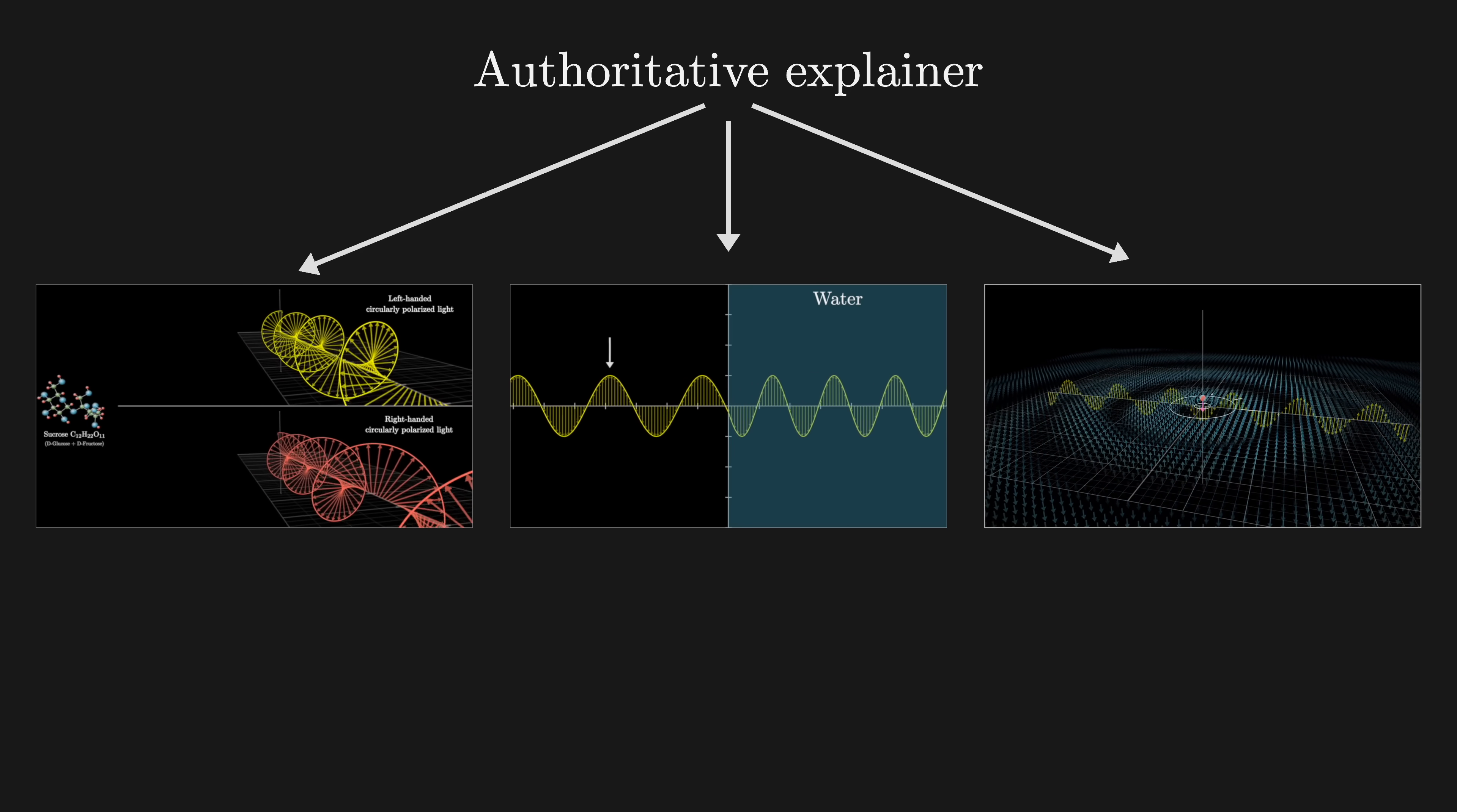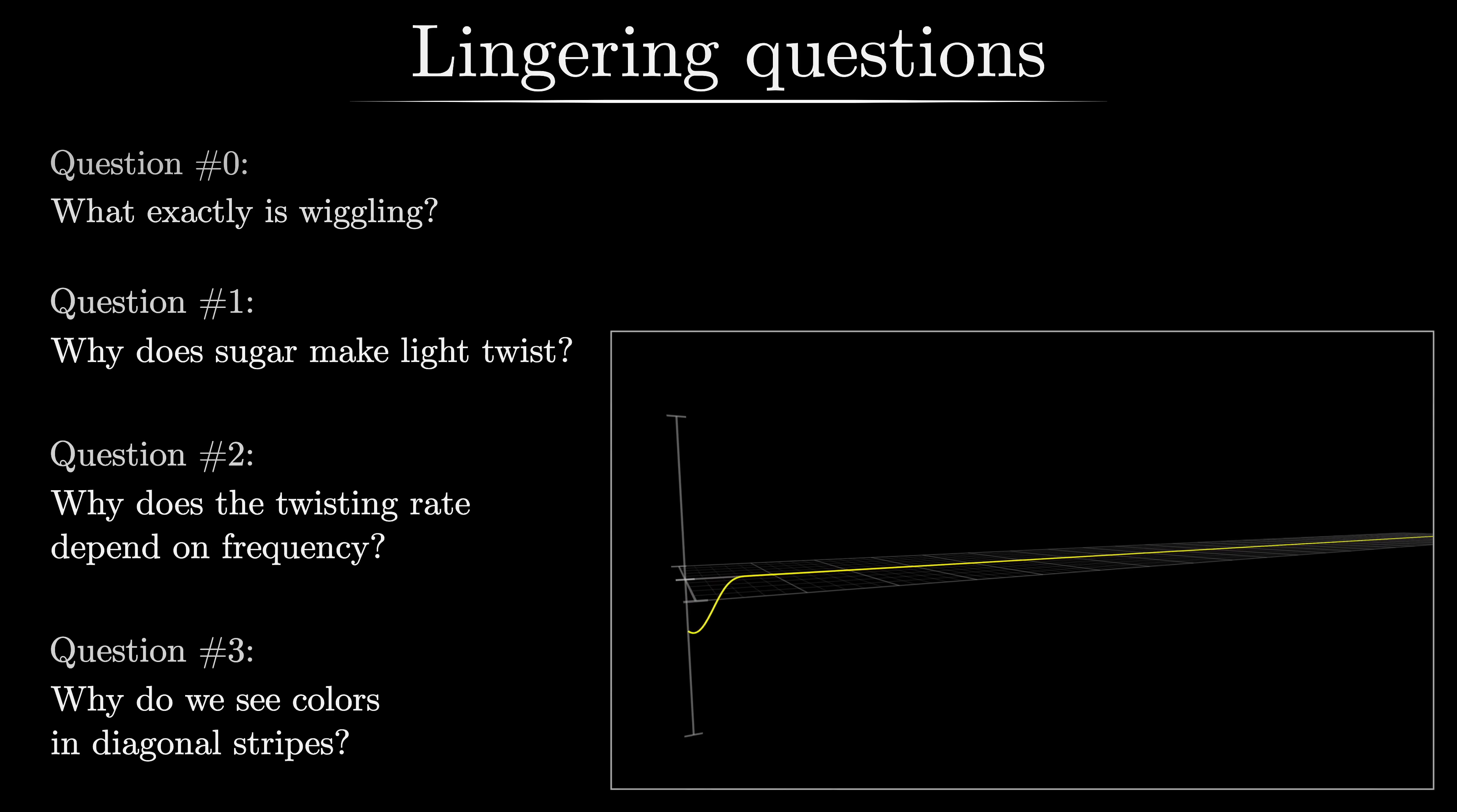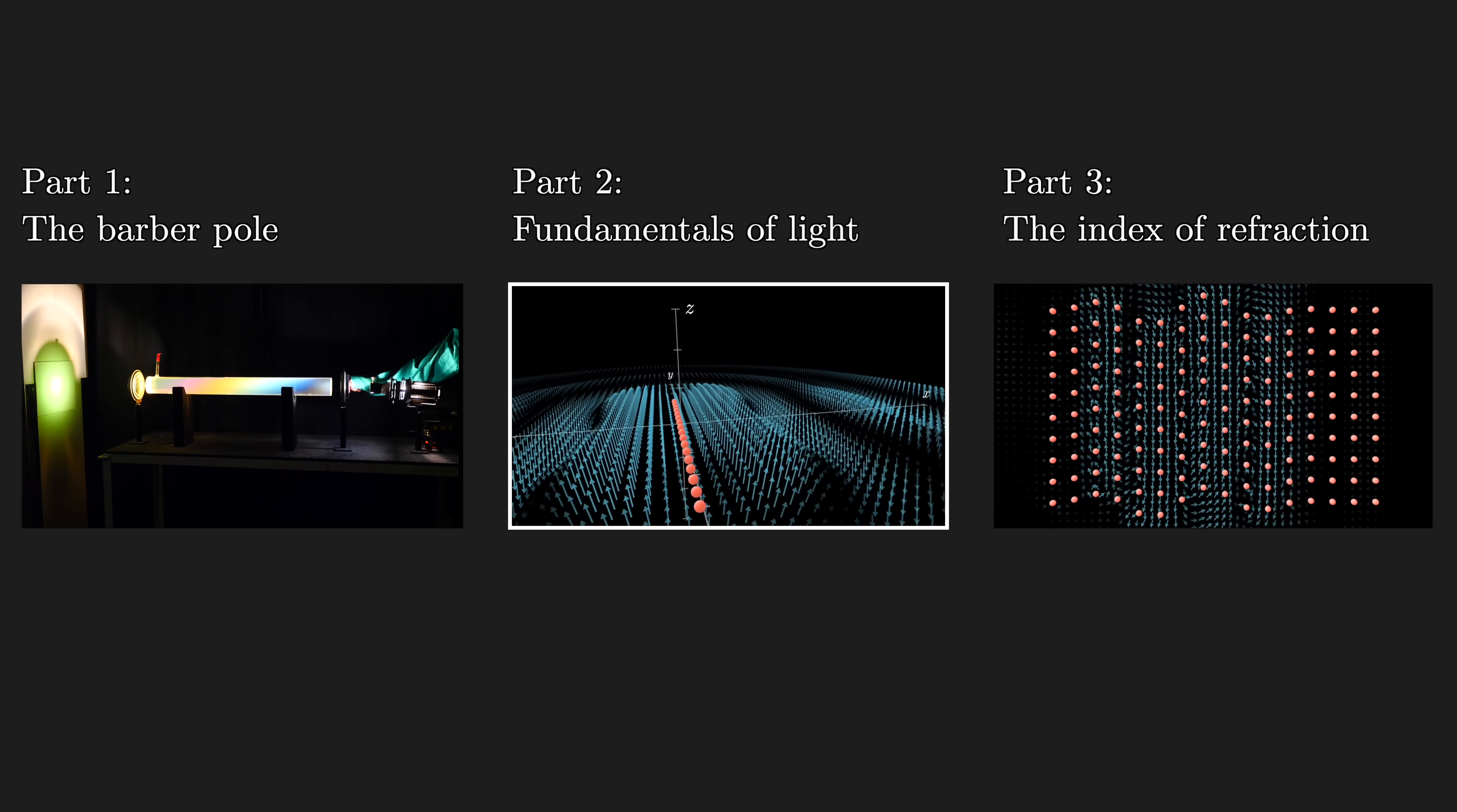My aim is for all of these answers to feel less like facts that I'm handing down from on high and more like inevitable discoveries emerging from a fundamental understanding for what light actually is. For that, we'll begin by returning to that question number zero: what exactly is wiggling? Which is to say, what is light? If you're curious about how the full explanation unfolds, come join me in the next video.